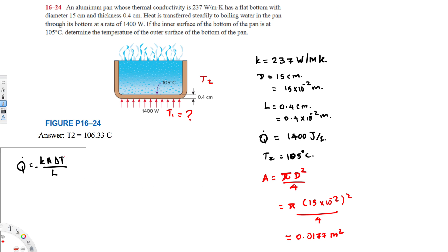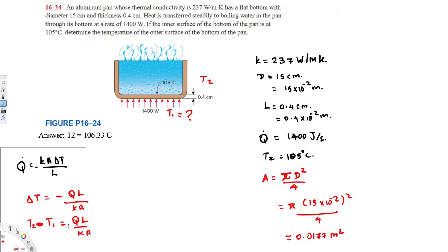Now let's rearrange the equation before plugging in values. Starting from Q̇ = −KA·ΔT/L, we can rearrange to get ΔT = −Q̇·L / (K·A). Since ΔT = T2 − T1, we have T2 − T1 = −Q̇·L / (K·A).